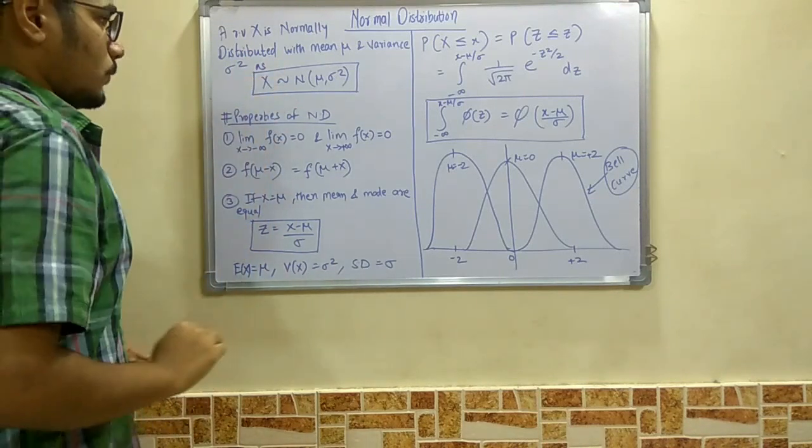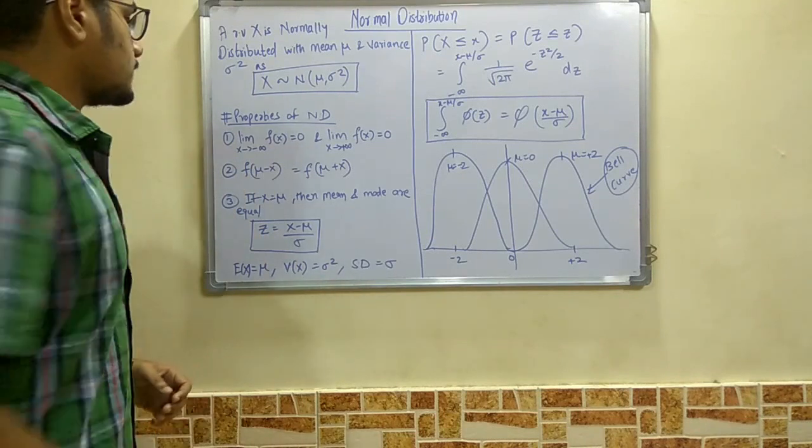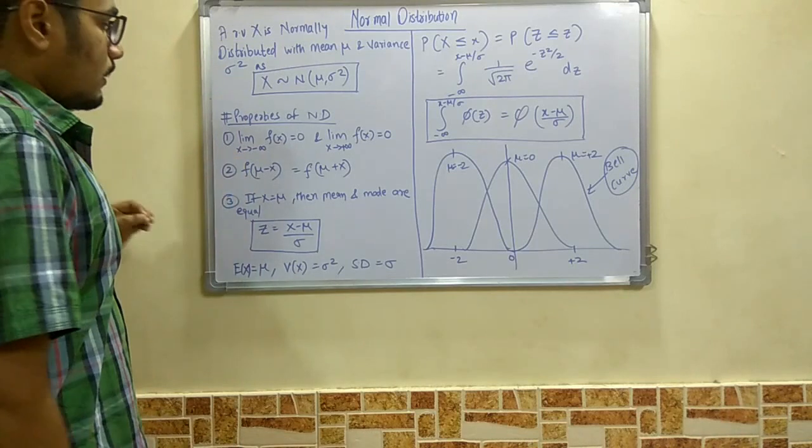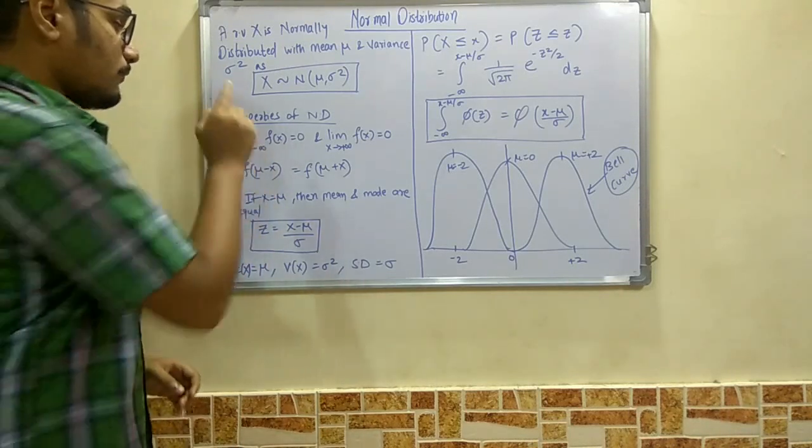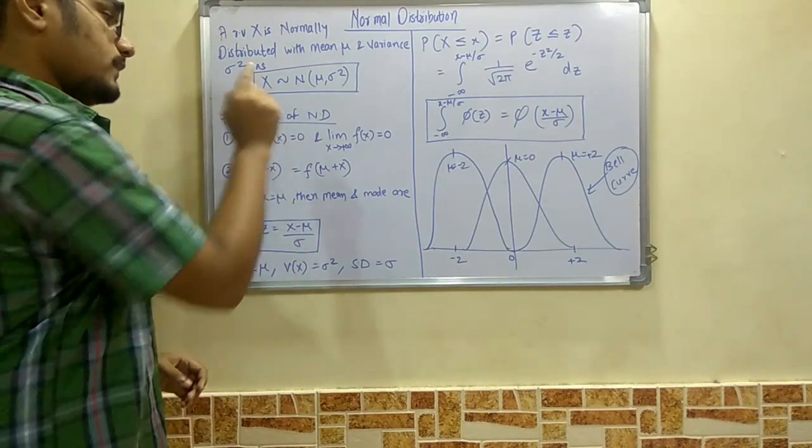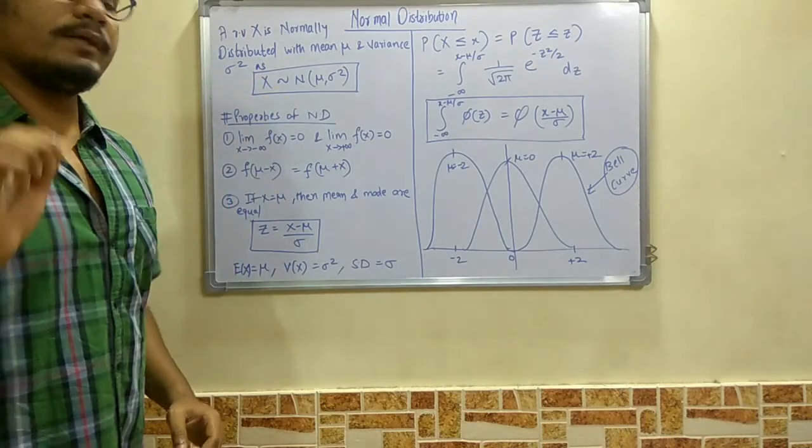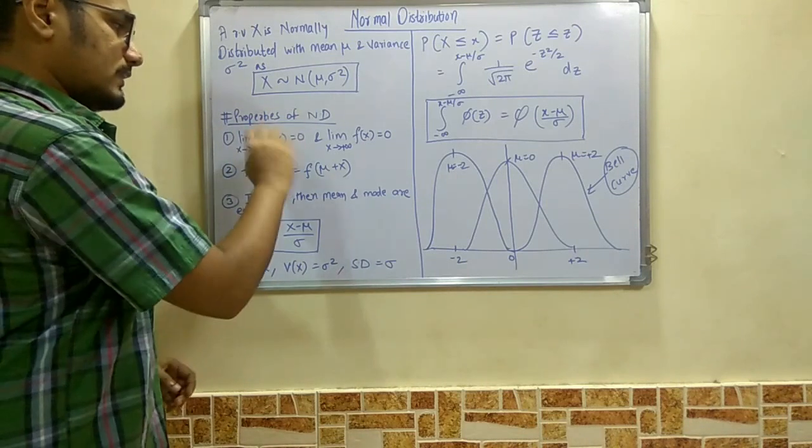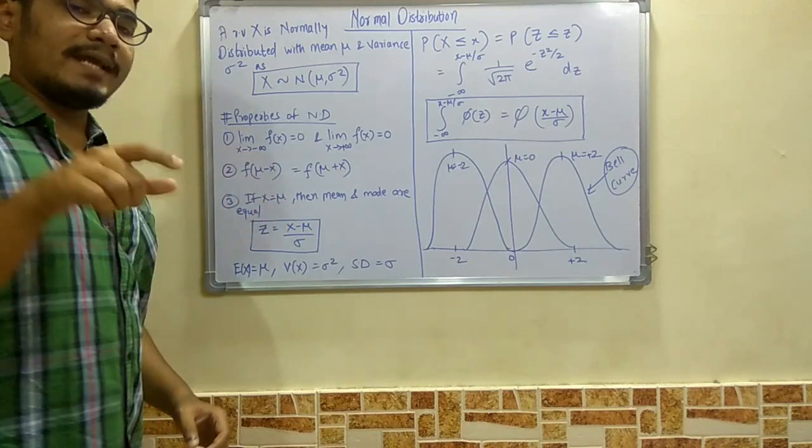Now let's move on to some of the properties for normal distribution. There are basically three properties. The first: if the limit of X tends to minus infinity for the function f(X), then it is 0. Also, if the limit of X tends to positive infinity for f(X), it equals 0. So we can write: lim X→-∞ f(X) = lim X→+∞ f(X) = 0.